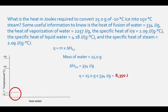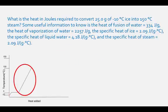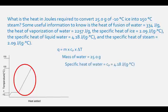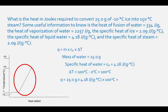The third part of the heating curve is the increase in temperature from 0 degrees to 100 degrees Celsius, which is the boiling temperature of water. The equation is Q equals mcΔT. The mass of the water is 25.0 grams, the specific heat of liquid water is 4.18 joules per gram degrees Celsius, and the change in temperature is 100 degrees Celsius minus 0 degrees Celsius, which equals 100 degrees Celsius. The heat of this transition is 25.0 times 4.18 times 100, which equals 10,450 joules.